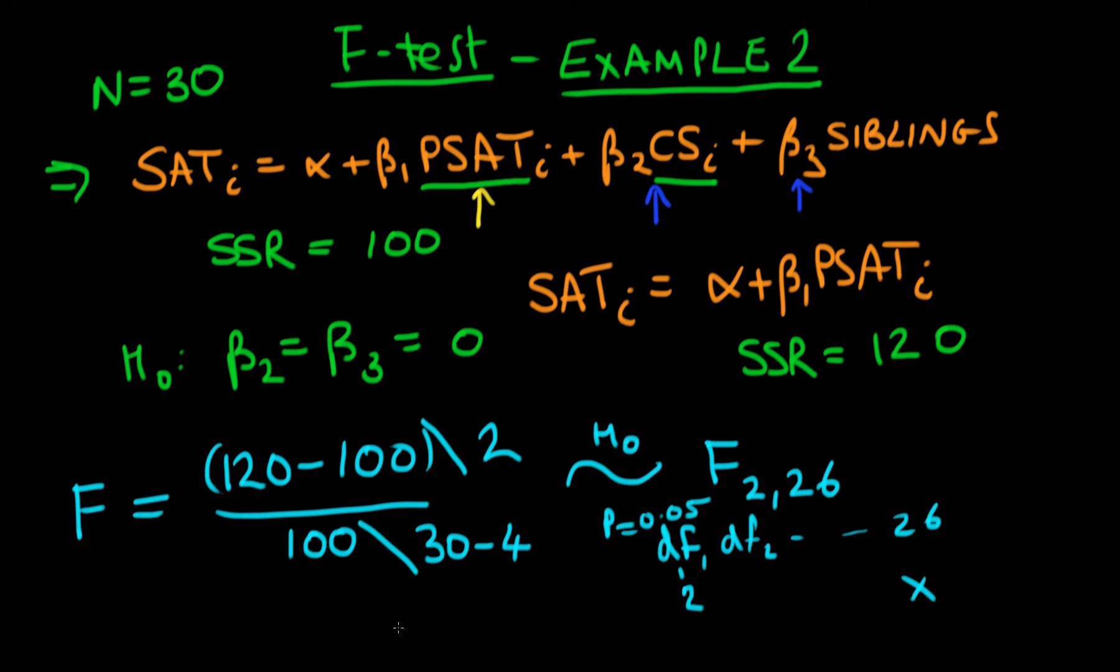So the idea is that we would compare our value which we get for our F statistic with this critical value which we get from our F table. So our value which we get for our particular F statistic, well the top is just going to be 10 and the bottom is going to be roughly 3. So we're going to get a value of F which is roughly something like three and a third.